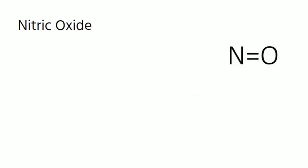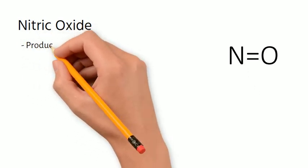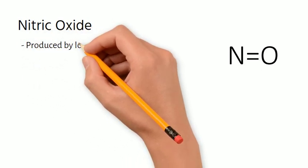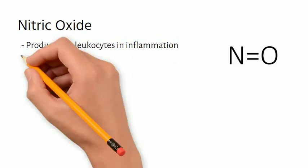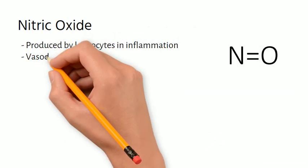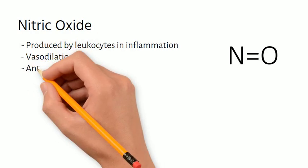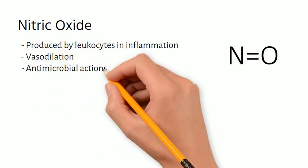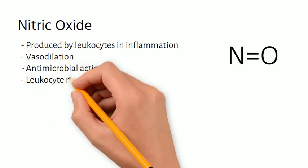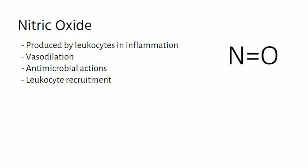Nitric oxide is a colorless gas with the formula NO. It has an unpaired electron and thus is a free radical. Nitric oxide is produced by leukocytes during inflammation. Release of nitric oxide leads to vasodilation, and it also has antimicrobial actions and functions to facilitate leukocyte recruitment.